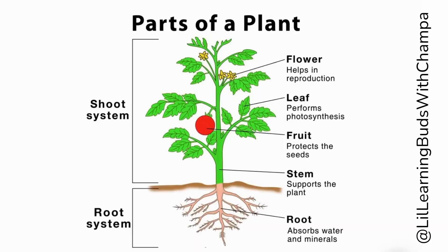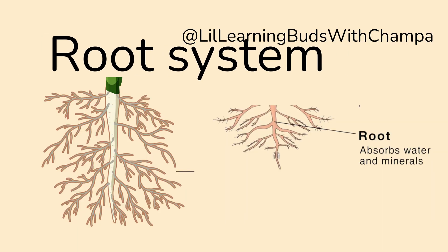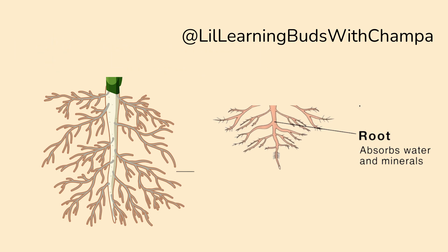Parts of a plant are broadly divided into the shoot system and the root system. The part of the plant that remains below the ground is called the root system.